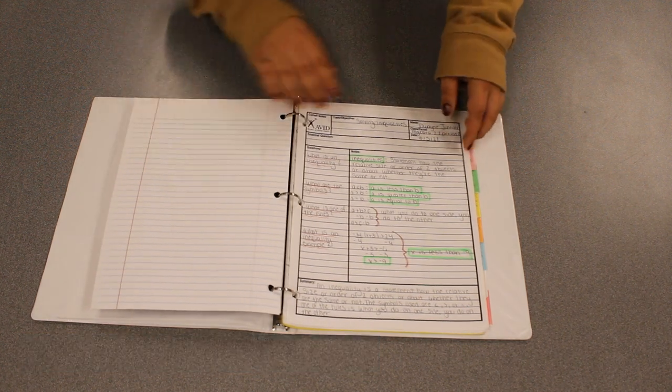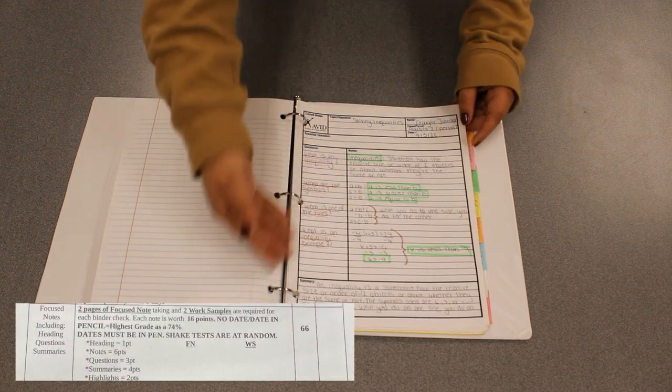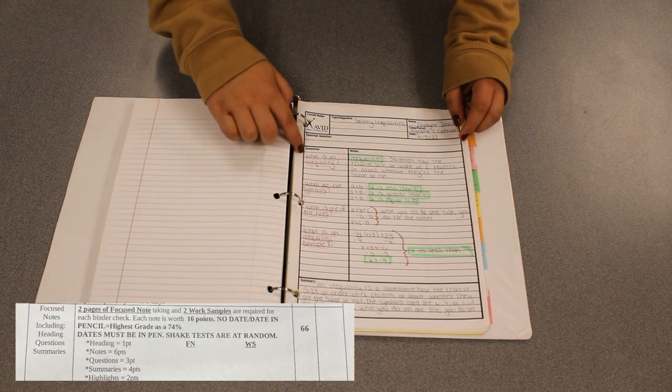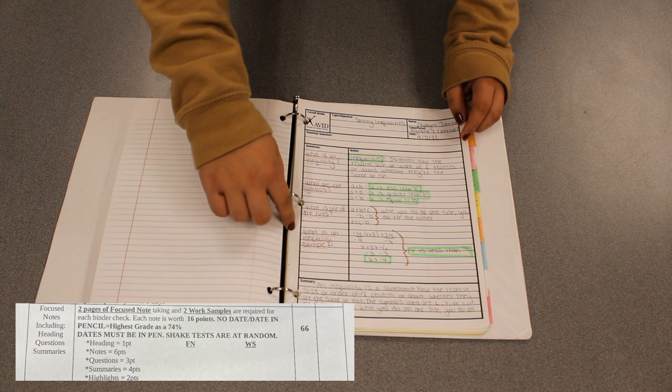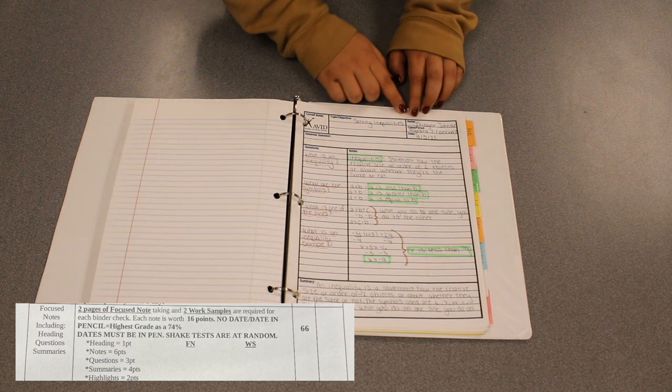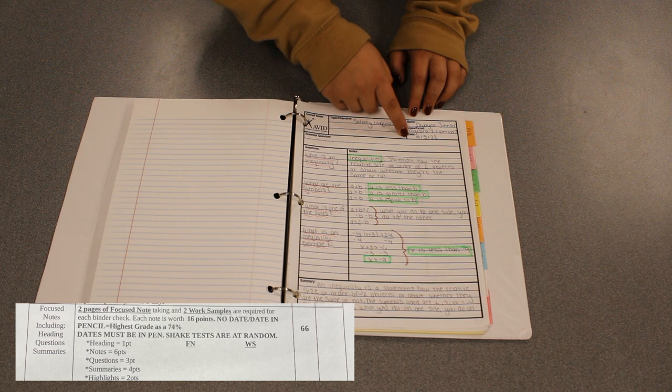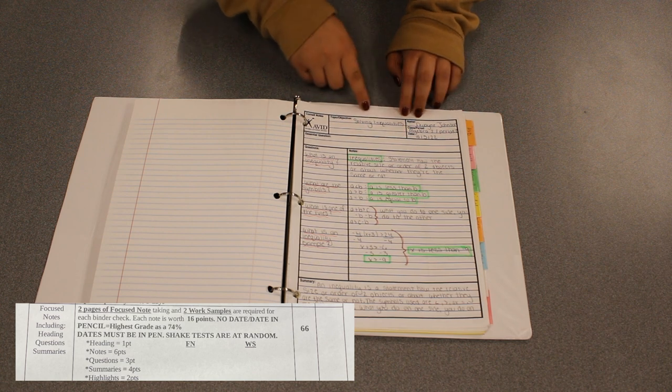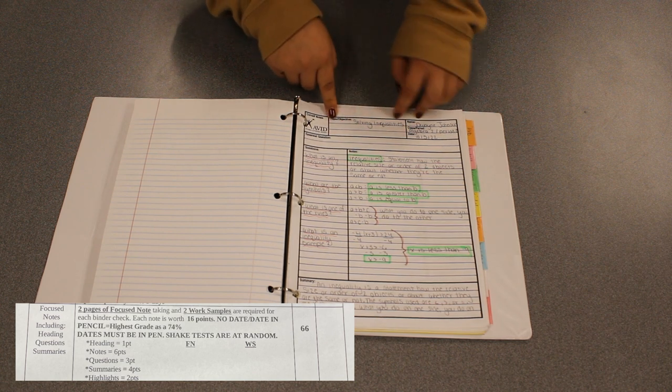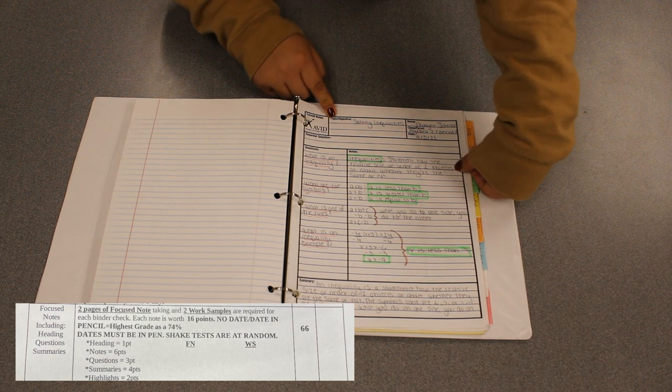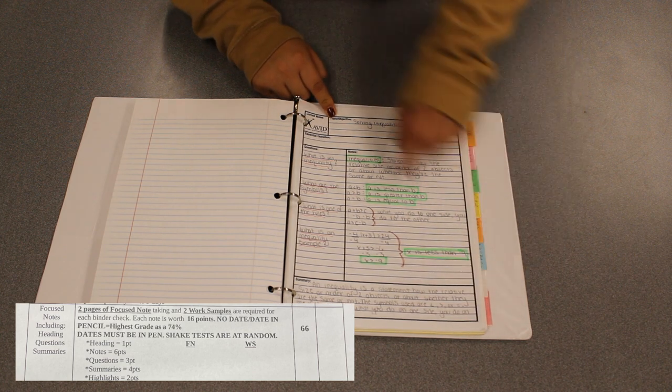Now these are your focus notes or Cornell notes. You're gonna have three to four questions that pertain to your notes. In the top right corner you're gonna have your name, date, and period all in pen. And your subject slash header is gonna be what the topic's about. And this is where you're gonna take your notes.